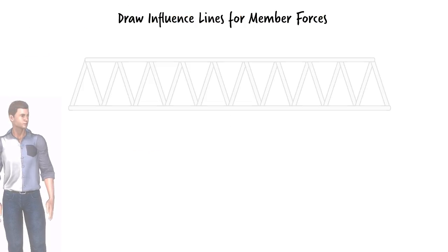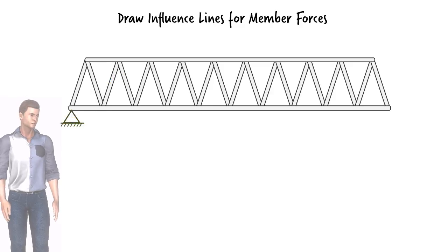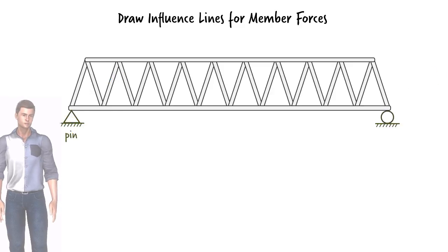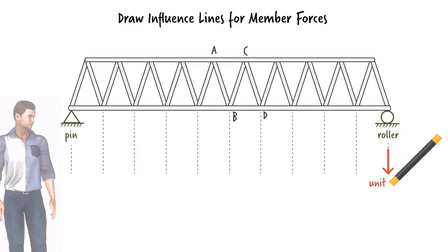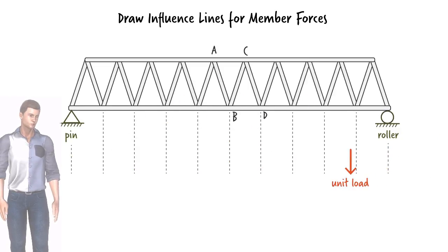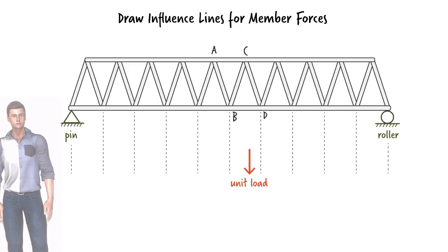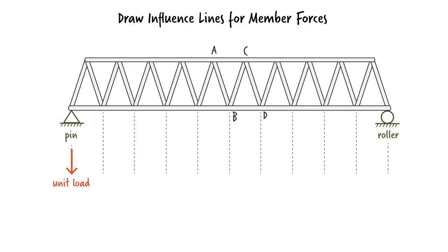In order to determine the maximum axial force in each of the three members, we start by drawing their influence lines. This involves placing a unit load at each of the joints along the bottom cord of the truss where the railroad track rests, then calculating the axial force in each member due to that load.